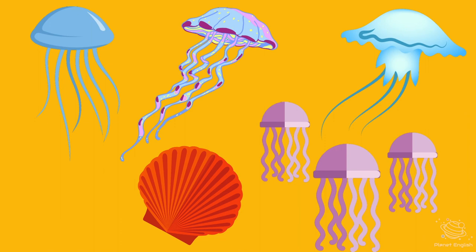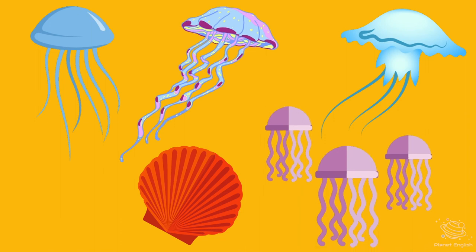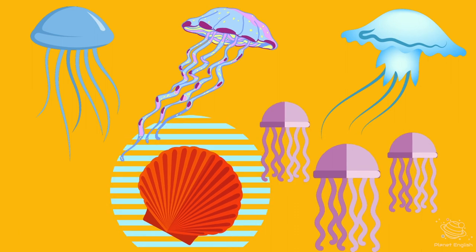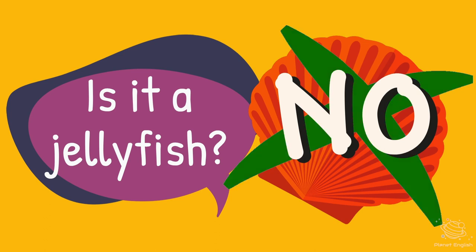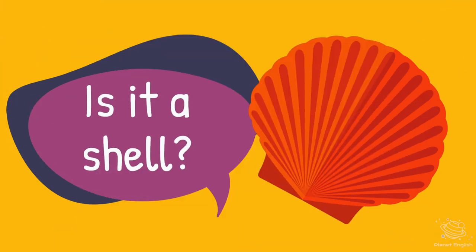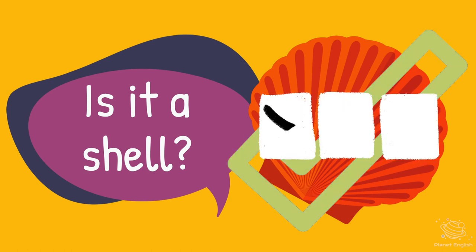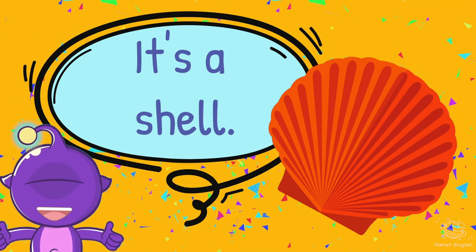Find the odd one out. 5, 4, 3, 2, 1. Is it a jellyfish? No. Is it a shell? Yes! It's a shell.